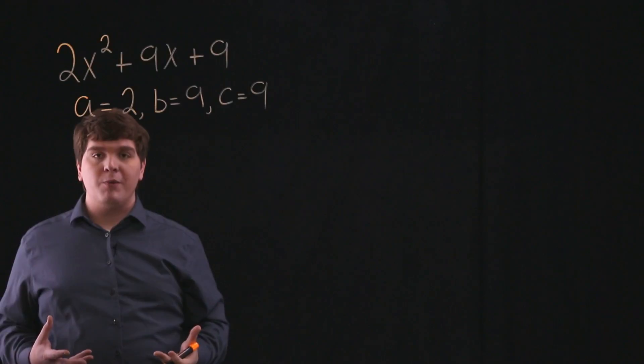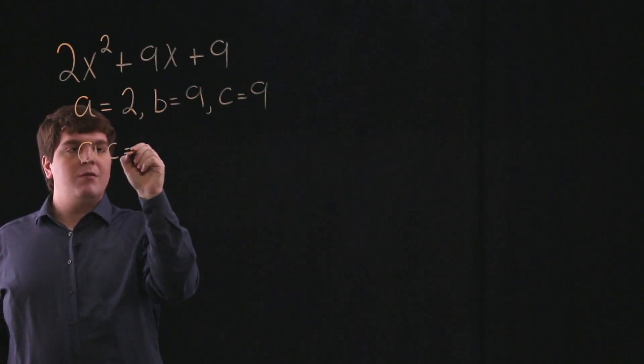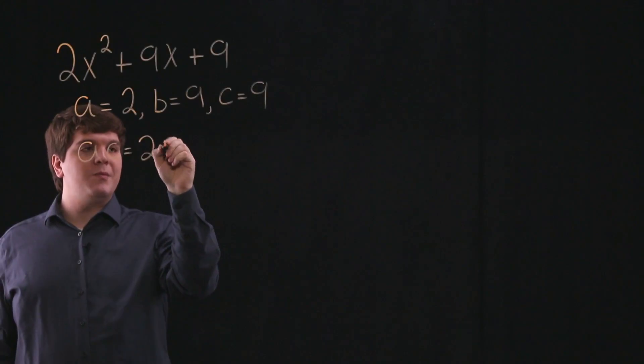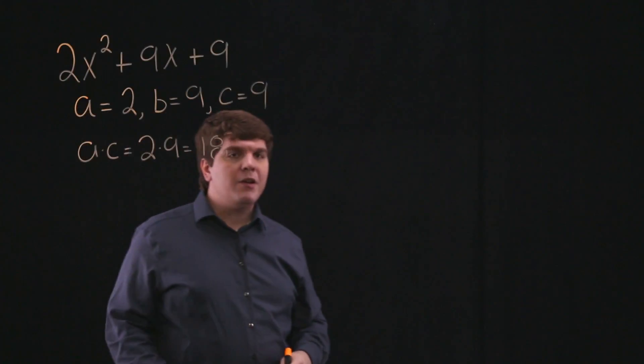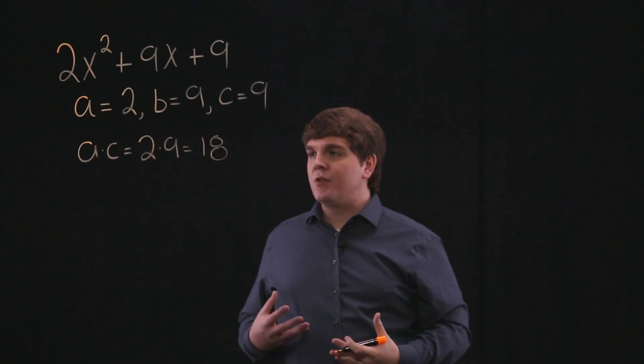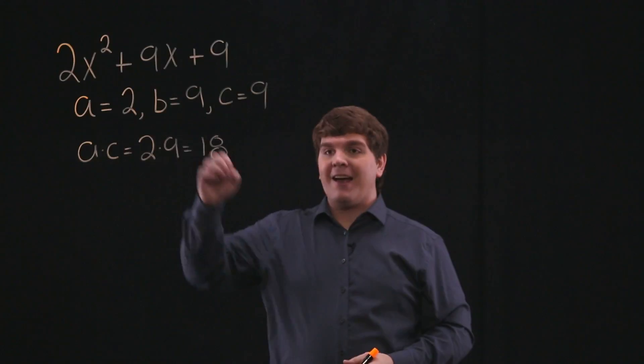So we'll begin factoring by grouping by multiplying a and c, which is equal to 2 times 9, or 18. Now what we do with this product is we want to look for two numbers which multiply to 18 and add to 9.